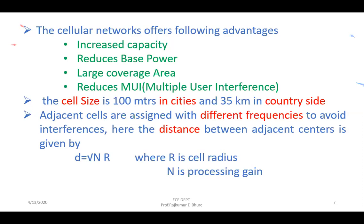As you increase the number of cells, multiple user interference is reduced. The cell size is typically 100 meters in cities and up to 35 kilometers in the countryside. Within a city, the area is densely populated and requires more power, so the cell area is divided into smaller cells. In countryside areas, a cell can cover up to 35 kilometers.